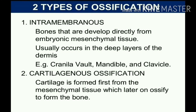There are two types of ossification: intramembranous ossification and cartilaginous ossification. Intramembranous ossification involves bones that are developed directly from the embryonic mesenchymal tissue. This usually occurs in the deep layer of the dermis. Examples include the cranial vault, mandible, and clavicle.